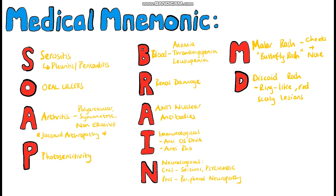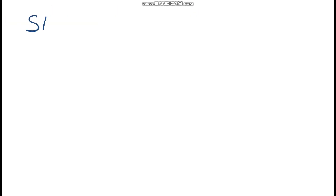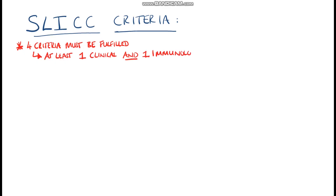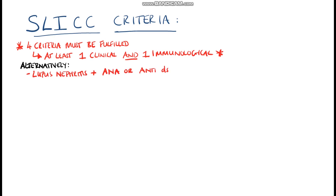If you know this mnemonic, then you're nearly there for the SLIC criteria for the diagnosis of lupus. You need four criteria to be fulfilled with at least one clinical and one immunological criterion, or the presence of lupus nephritis with anti-nuclear antibodies or anti-double-stranded DNA antibodies.